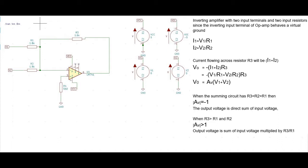When the R3 value is greater than R1 and R2, the gain of the op-amp is greater than 1. Then the output voltage is the sum of the input voltages multiplied by R3 divided by R1.